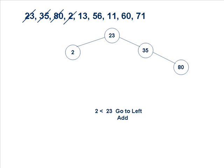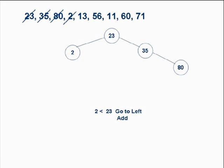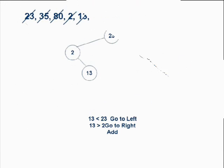The next number is 2. We take 2 and compare it with 23. Since 2 is smaller than 23, we place it simply on the left hand side, as per the rules of a binary search tree that a node with a smaller value is placed on the left hand side of the root node.